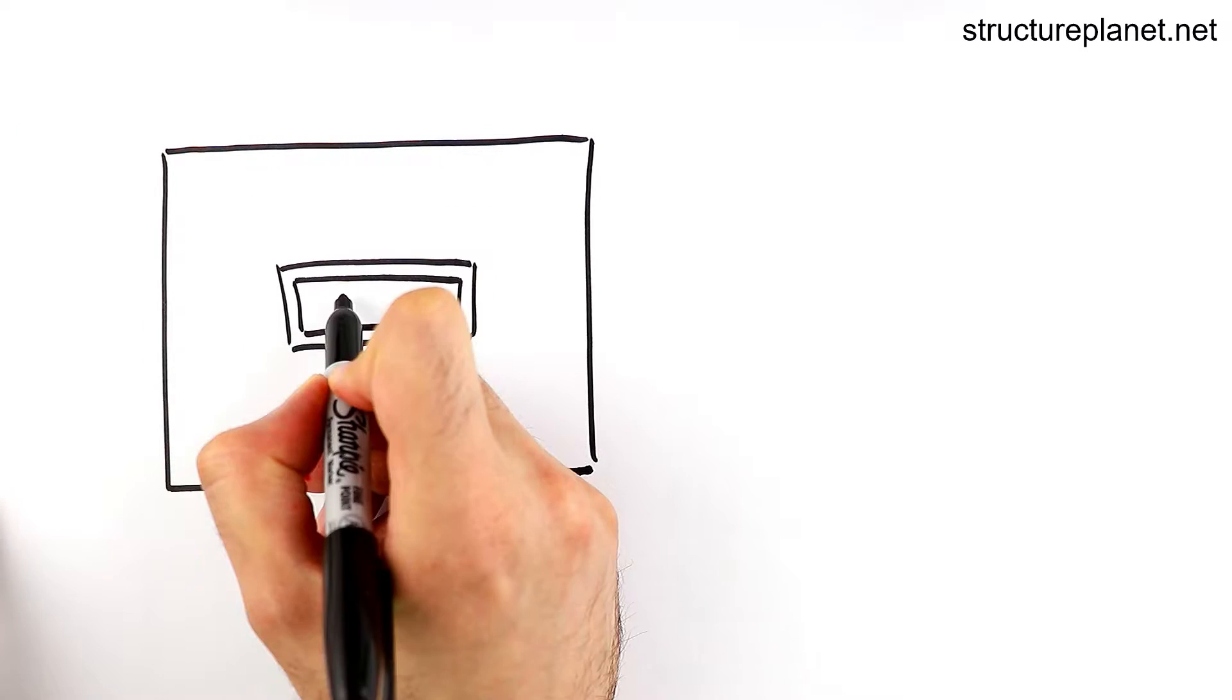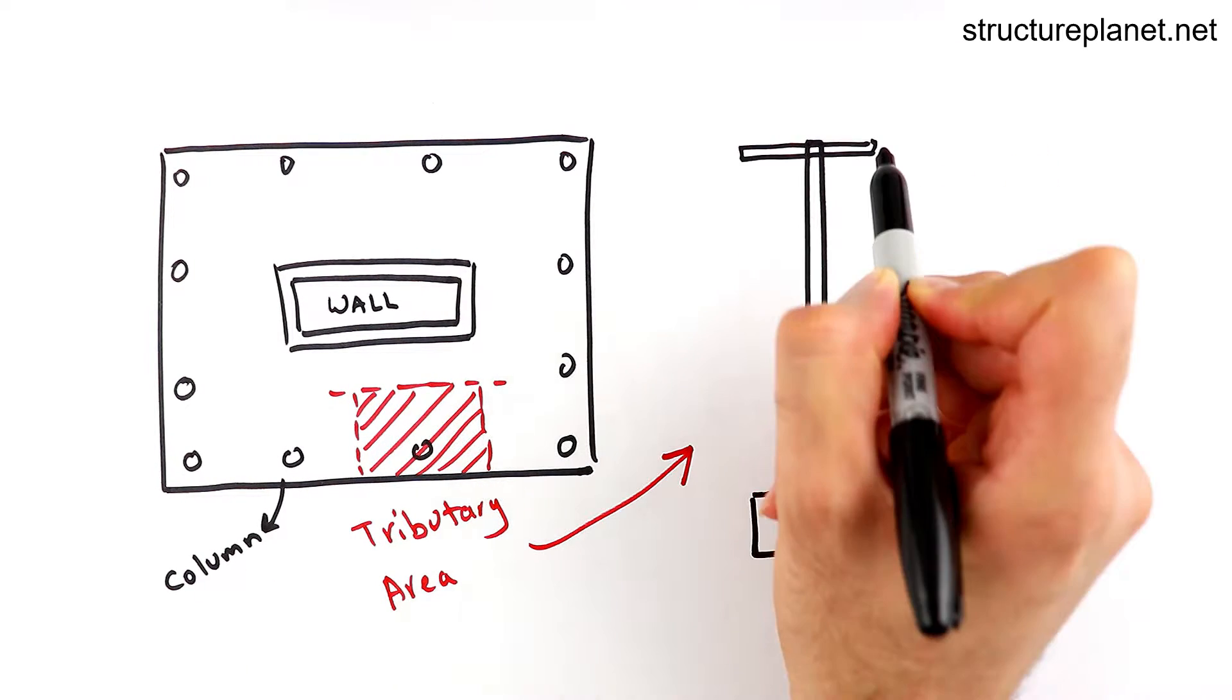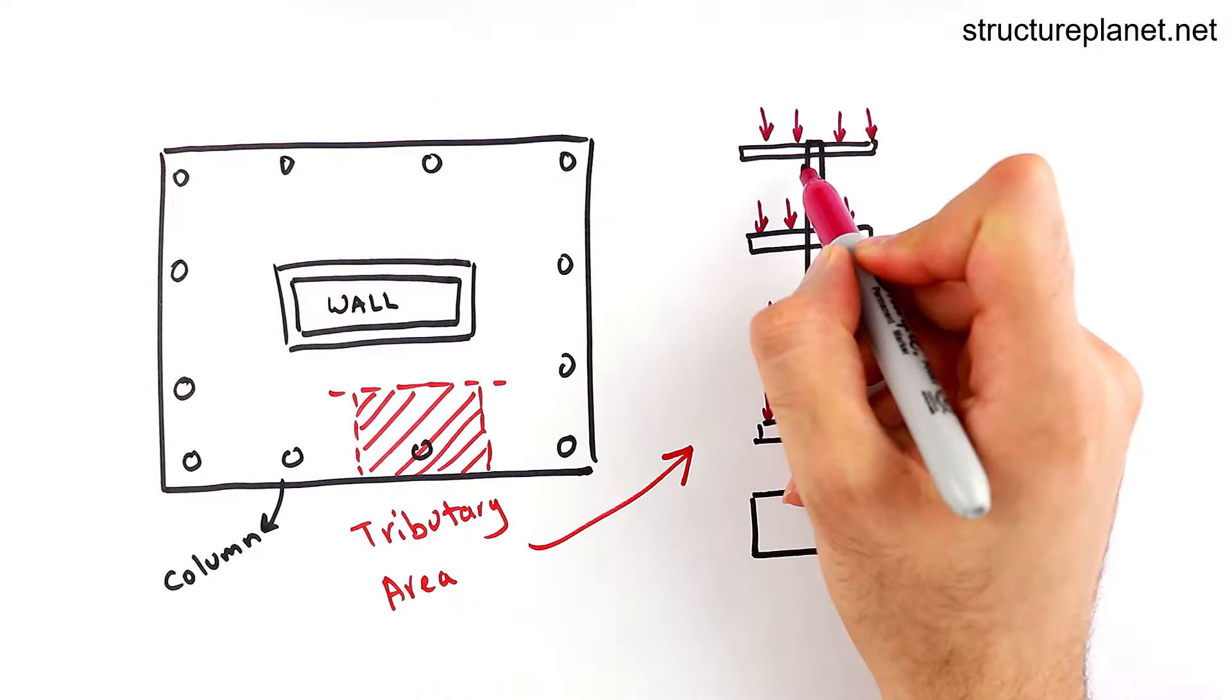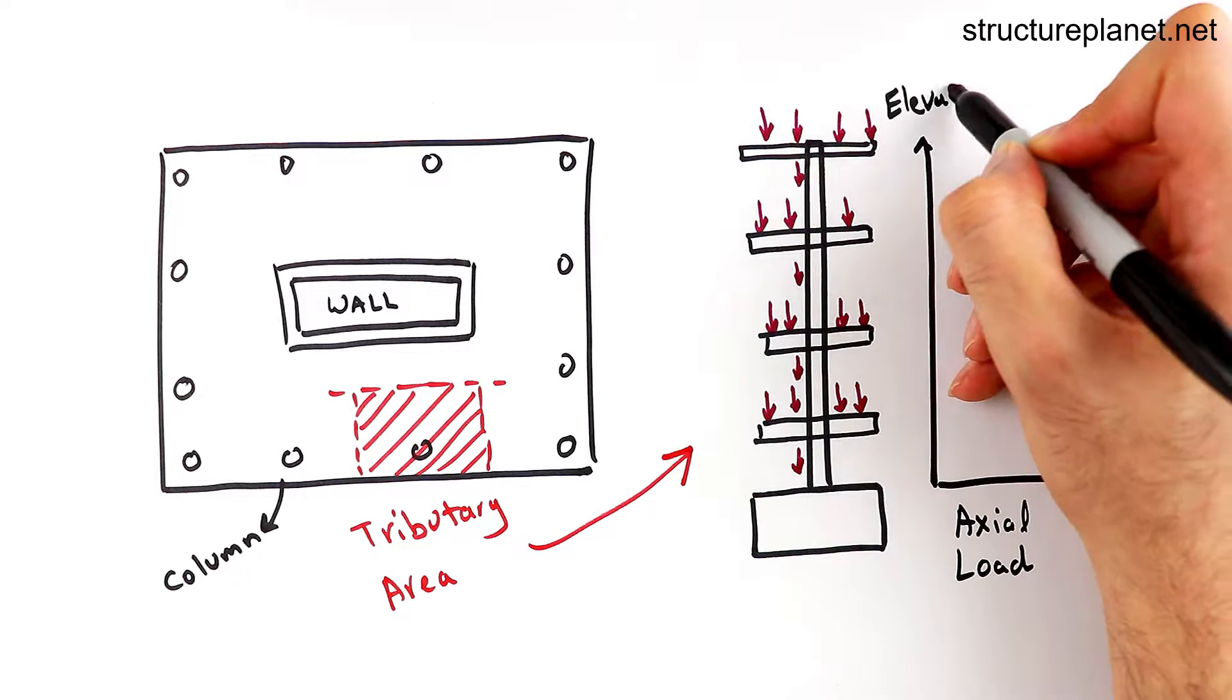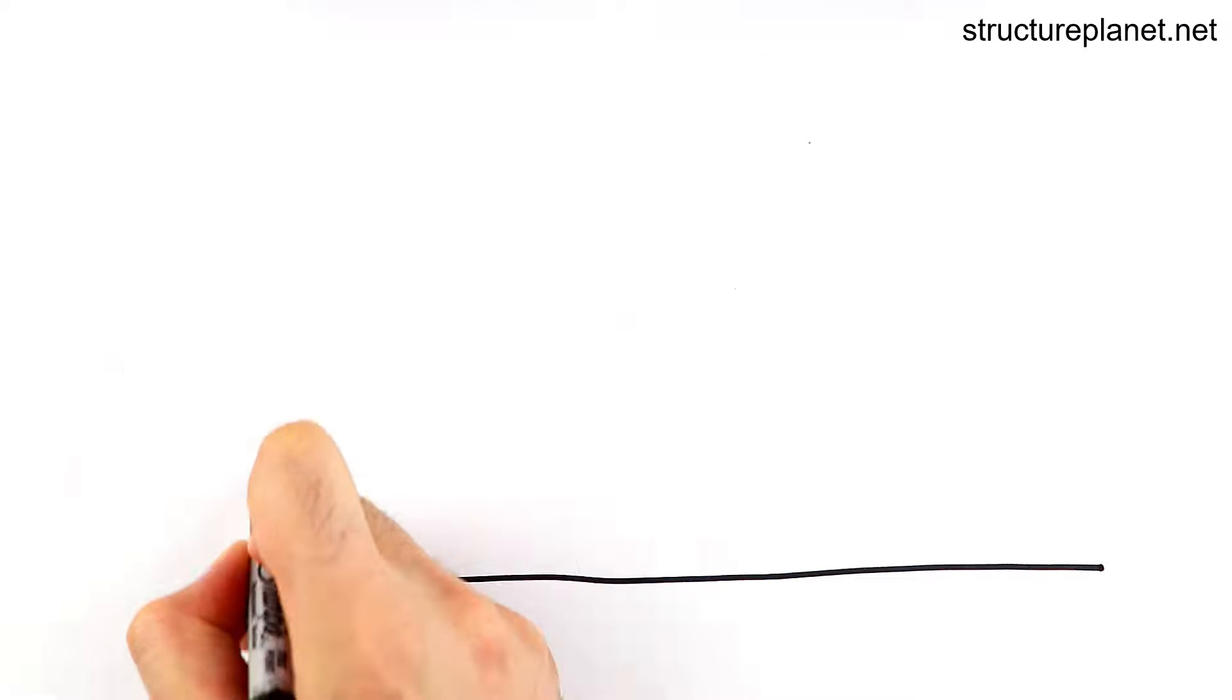This is a sample floor system and as you can see each floor is supported by columns and walls which transfer down the gravity loads axially. Gravity loads from each story are cumulative as they get transferred down to the foundation.